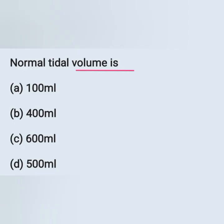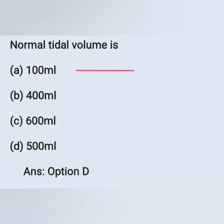Next question: normal tidal volume is? Options: A) 100 ml, B) 400 ml, C) 600 ml, D) 500 ml. Normal tidal volume is about 500 ml. Tidal volume means the volume of air breathed in and out during a quiet single respiration. Option D is the correct answer.